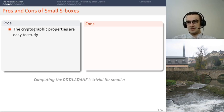The advantages of using small s-boxes are that the cryptographic properties are easy to study, because computing the relevant properties for a permutation that has a small block size is computationally trivial. So if you want to compute the DDT, the LAT, or the ANF, when n is small, it's very easy.